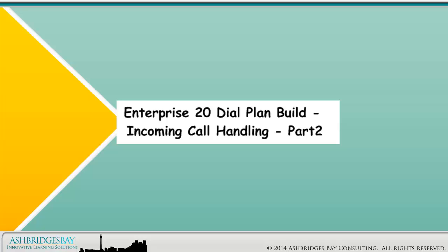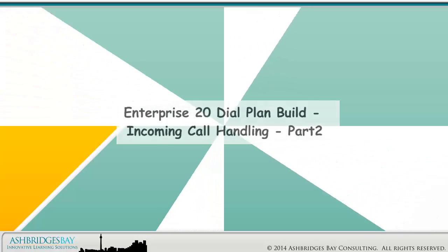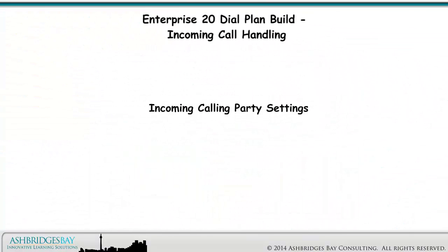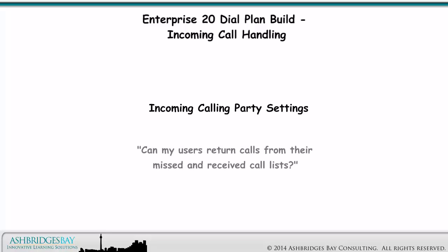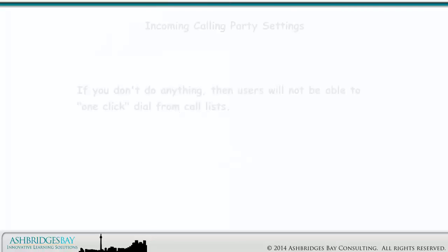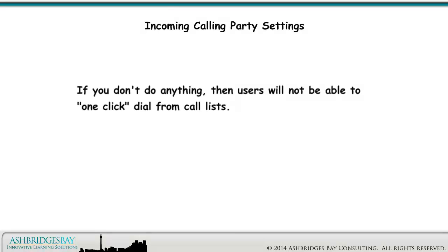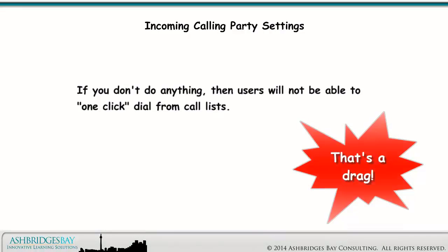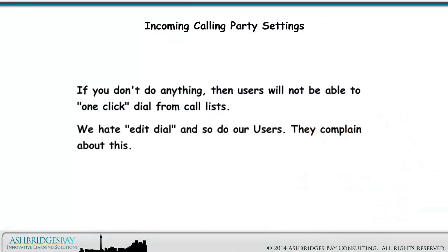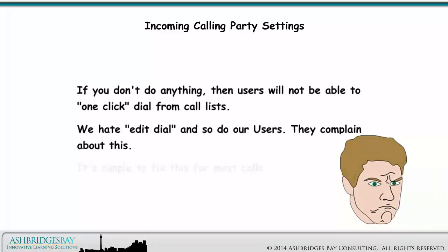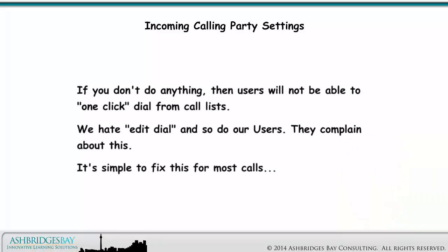Welcome to our Whiteboard Drawing Enterprise 20 Dial Plan Build, Incoming Call Handling Part 2. Incoming calling party settings are used to answer the question: can my users return calls from their missed and received call lists? If you don't do anything, users will not be able to one-click dial from call lists. We hate edit dial, and so do our users. It's simple to fix this for most calls.